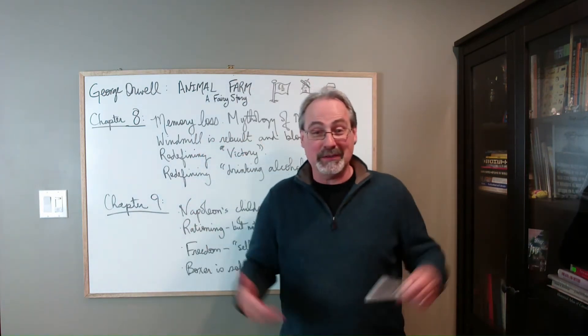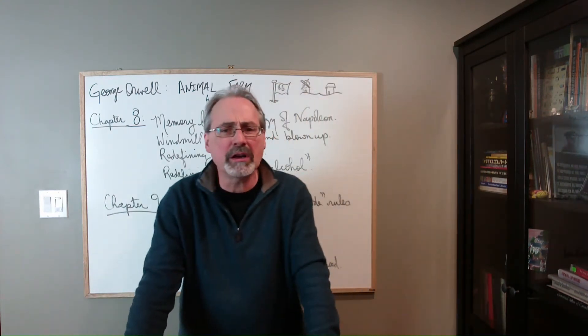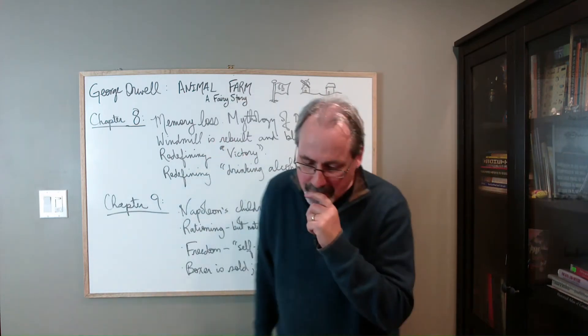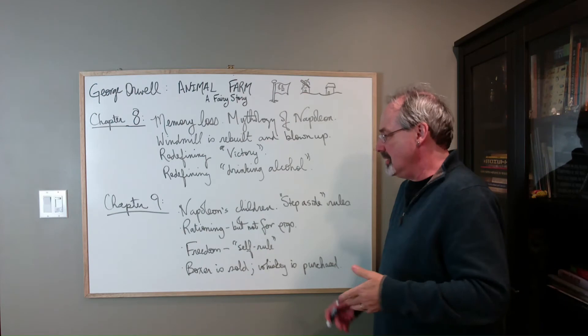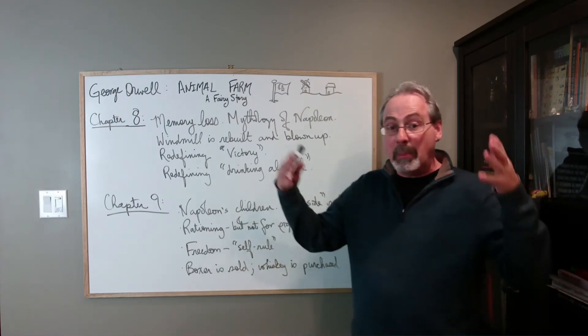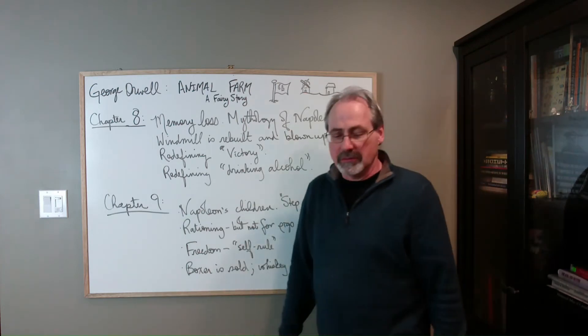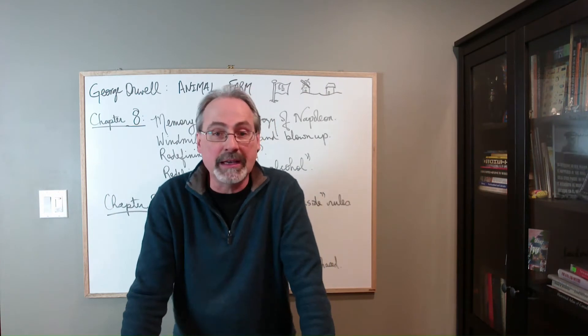And so Napoleon even starts producing his own alcohol, but probably it's not going to be that good when you start. In chapter nine, it's just a continuation of the development of the Napoleon mythology. He's hiring lots of children. So the pig class, the privileged class just keeps growing larger and larger.